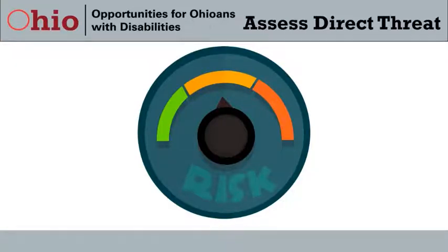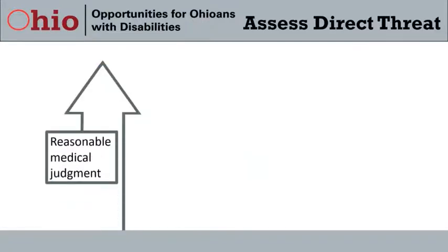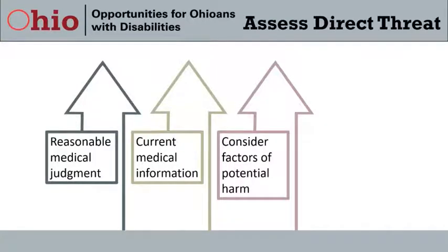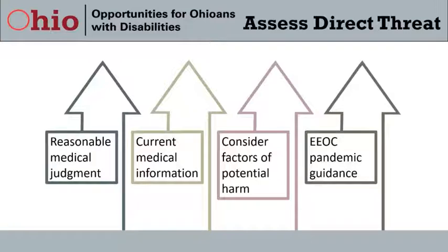The employer would need to conduct an individualized assessment using the EEOC's criteria, which states that determining direct threat must be based on reasonable medical judgment about the condition using the most current medical information and the best objective information available. During the assessment, the employer is required to consider factors like the duration of the risk, the nature and severity of the potential harm, the likelihood the harm will occur, and the imminence of the potential harm. Additional pandemic-specific factors include how severe the pandemic is in the employer's area, the likelihood the employee would be exposed at work, and the measures the employer has implemented to protect workers.